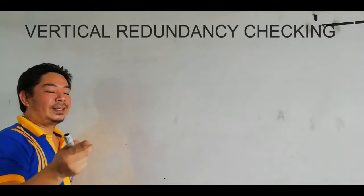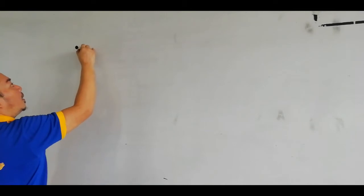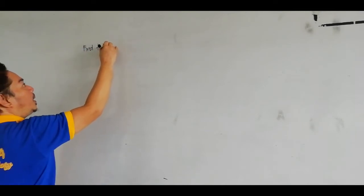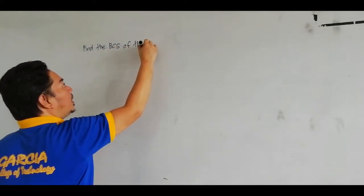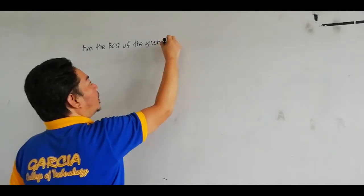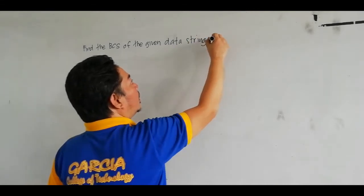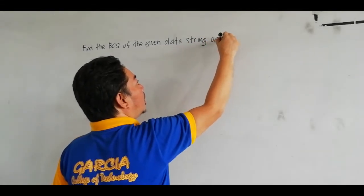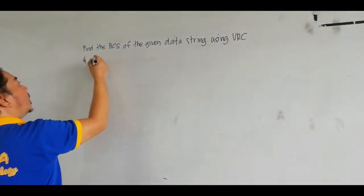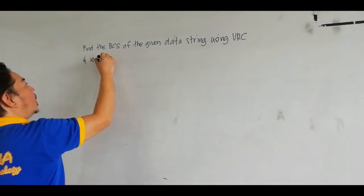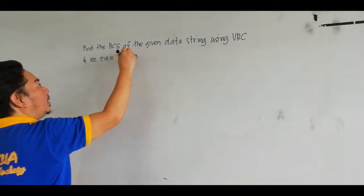Today everyone, we have here another topic for BRC. The question is: find the BCS of the given data stream using BRC, Aero Connection, and use Even Parity.